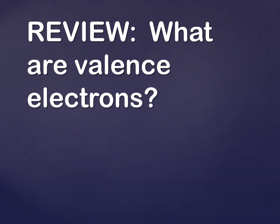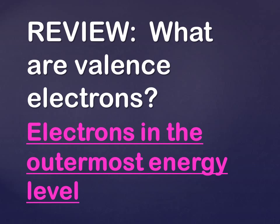We want to review what a valence electron is. If you watched the chapter 19 video, I said it over and over so you couldn't forget it. Valence electrons are electrons in the outermost energy level. So when we drew those atoms with the rings around it, it would have been the electrons — the dots — in that last ring.